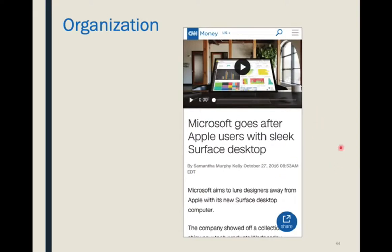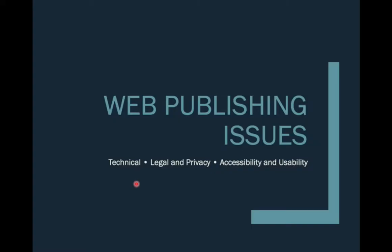Here's a great example on CNN Money: 'Microsoft Goes After Apple Using a Sleek Surface Desktop.' We've got the time it was last updated so we know it's current. Then a topic sentence gives more information: 'Microsoft aims to lure designers away from Apple with its new Surface desktop computer.' And now we can go deeper into the background information.